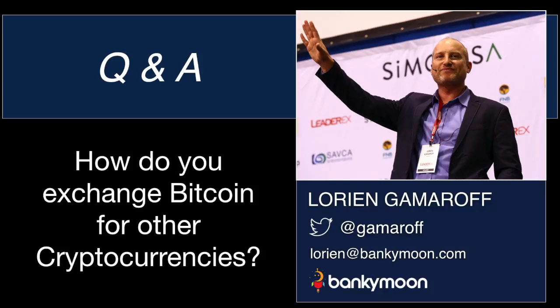It's very easy if you have Bitcoin to download a wallet like Jaxx or Coinomi. What they allow you to do is trade in your wallet directly into another currency. There are also other services like ShapeShift.io and Changelly.com. So if you've got Bitcoin, you can easily go and swap it out and buy a whole host of other currencies — Ether, Litecoin, and all that kind of stuff.